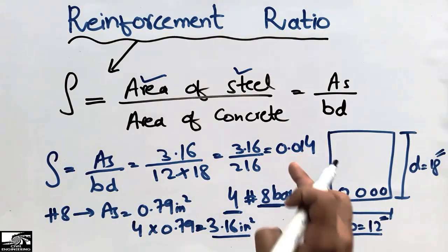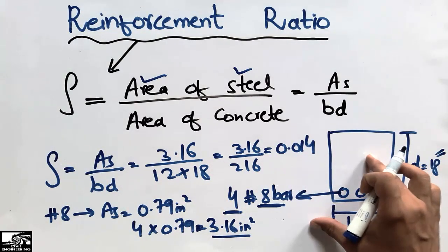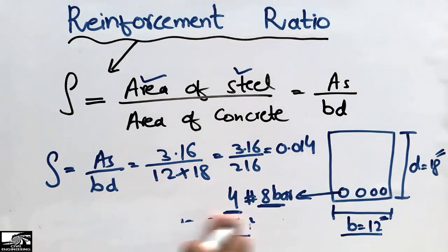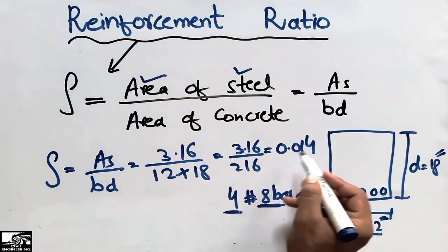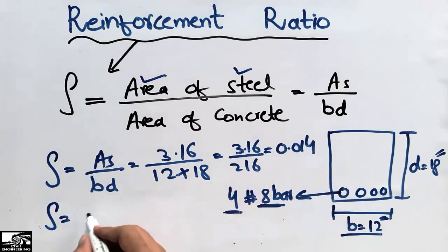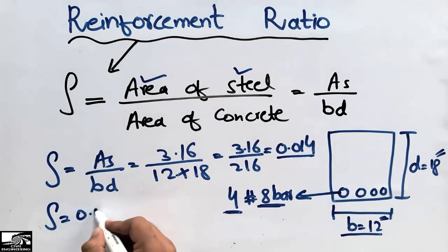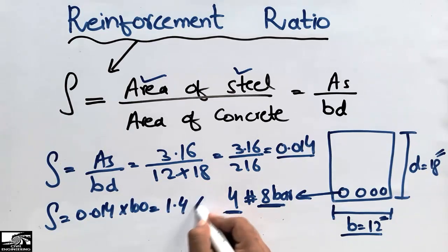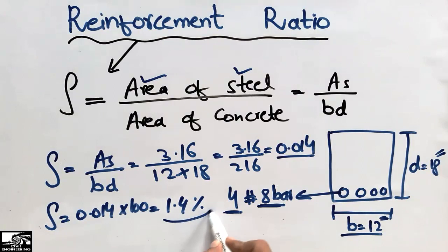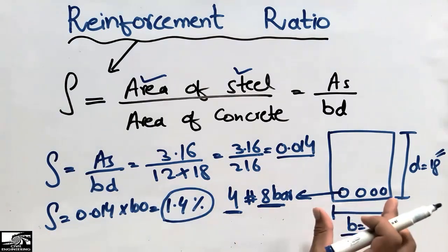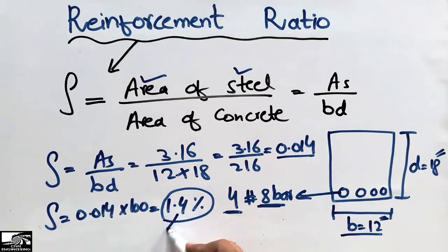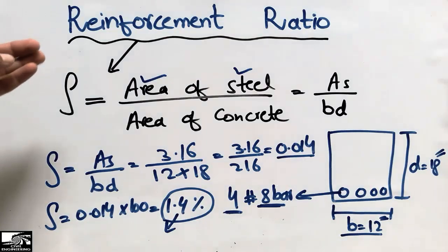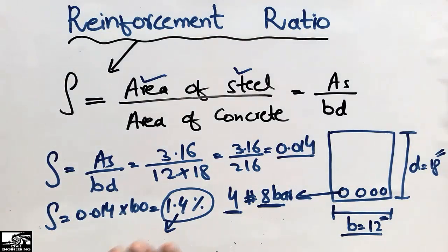This means 0.014 is the amount of reinforcement used relative to the area of the beam or column section. We can also represent this in terms of percentage: multiplying 0.014 by 100 gives 1.4%. So the reinforcement ratio for this beam or column section is 1.4% — this is the amount of reinforcement used as a percentage of the concrete area. This is called the reinforcement ratio.